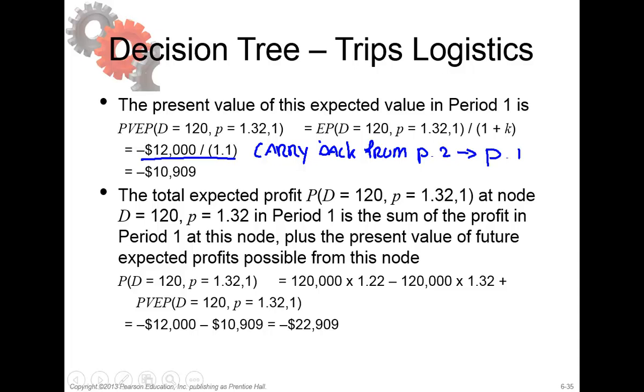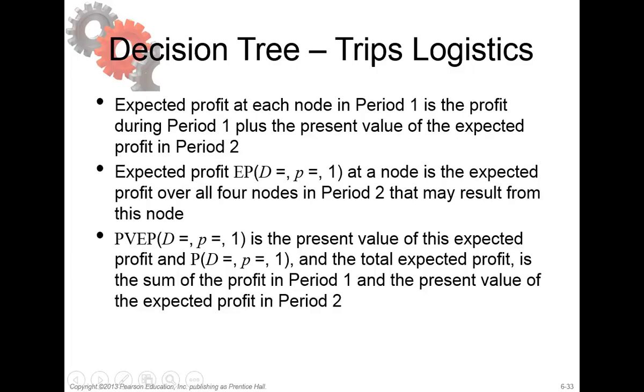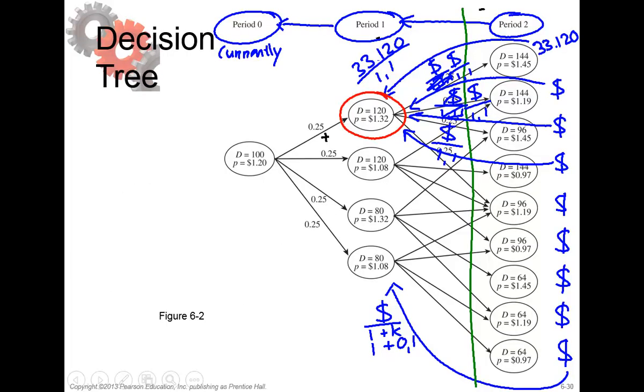But in year 1 we also got a result. That result is 10,909 - that's what we carried back from period 2 to period 1. But in year 1 we also got a result. Here we got all results - 1, 2, 3, 4. And we brought them back. But as well as in period 2 there are revenues, there are also revenues for period 1. So now we are going to do exactly the same as with period 2. We are going to calculate the result for this node.